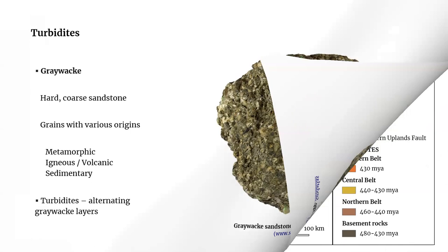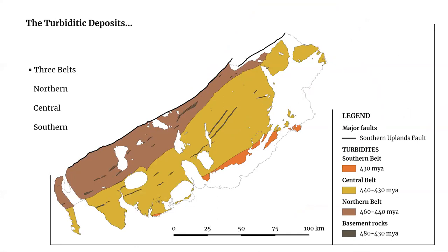Traditionally, the Southern Uplands terrain was divided into three belts according to the age of the turbiditic deposits: a northern belt, a central belt, and a southern belt, which are largely similar in composition — predominantly greywacke sandstones alternating with other rocks in smaller proportions. What is interesting about these turbidites is that the different grains contained within the greywacke hint towards different sources.